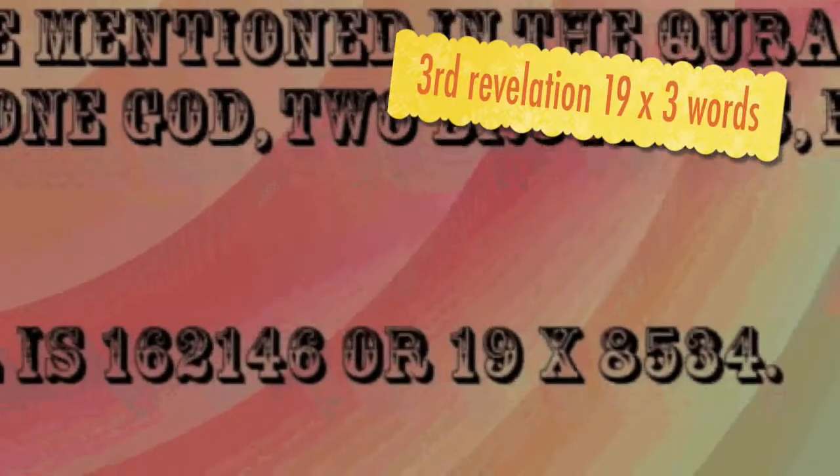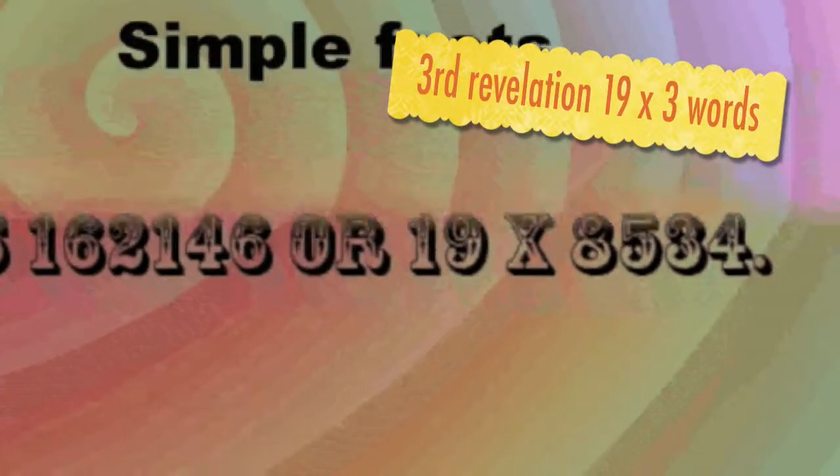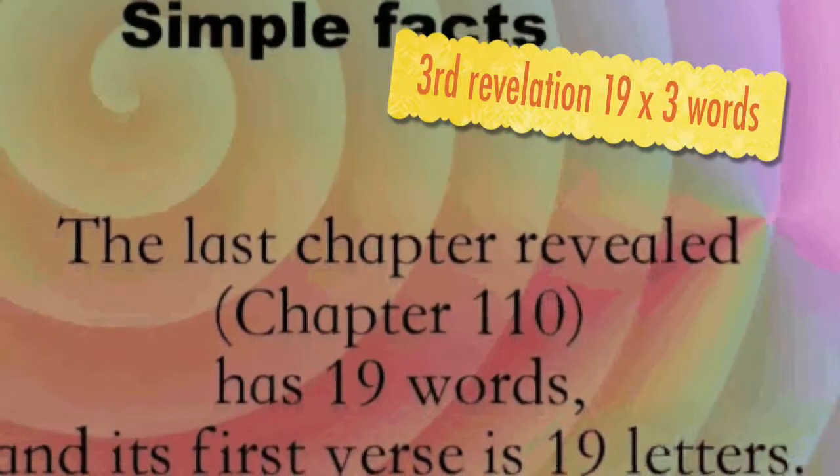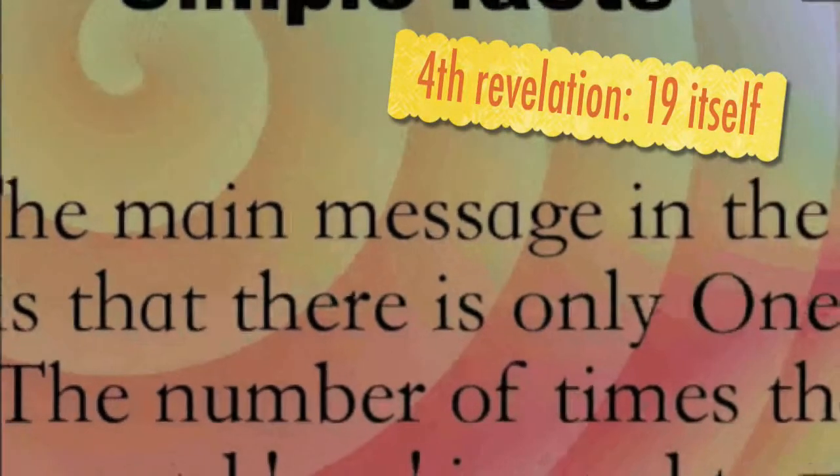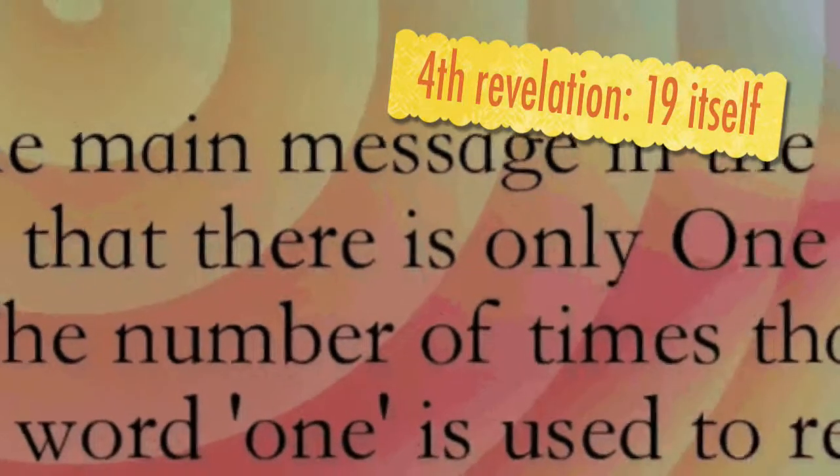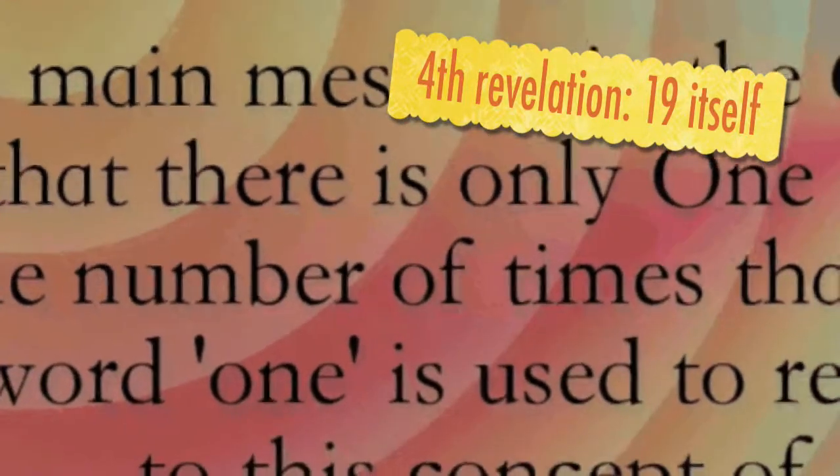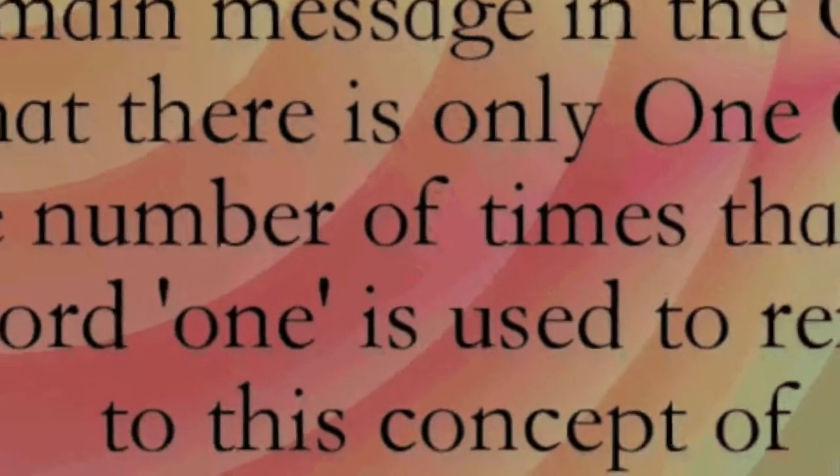11. Third revelation, 73:1-10, was 57 words, 19 times 3. 12. Fourth revelation, 74:1-30, brought the number 19 itself.